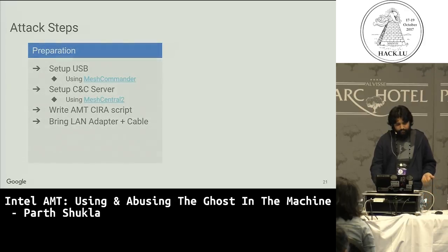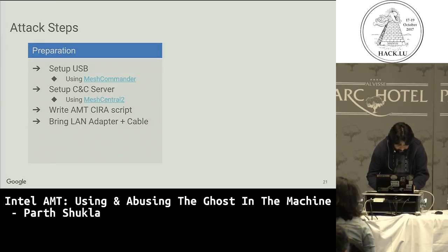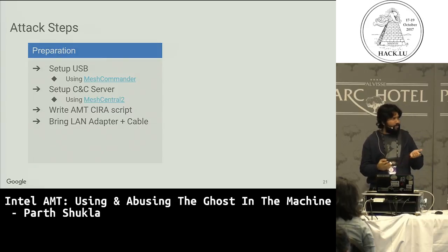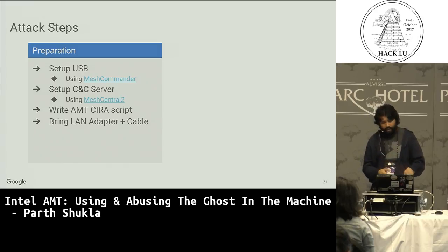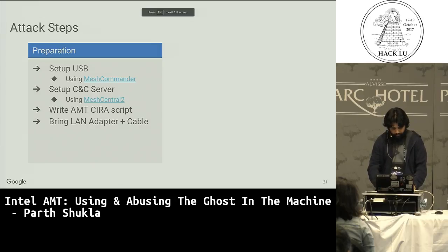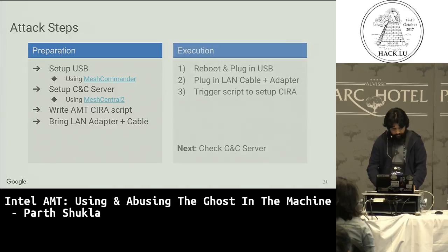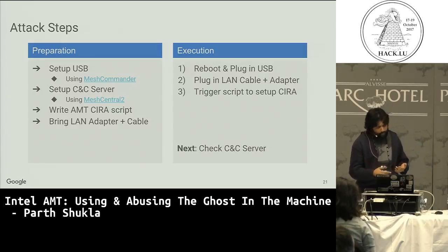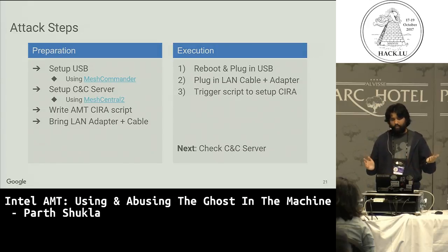Attack steps. Preparation: set up USB using Mesh Commander, set up command and control server using MeshCentral2, write an AMT CIRA script, and bring the LAN adapter and cable. For execution: reboot, plug in USB, let the provisioning complete, plug in LAN cable and maybe an adapter depending on the laptop being attacked, trigger the script, then walk away.